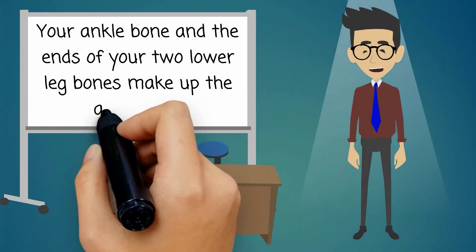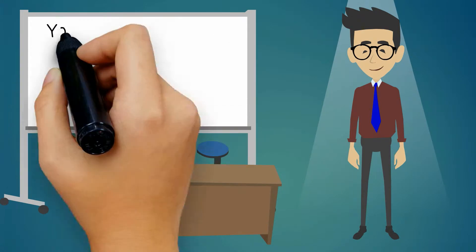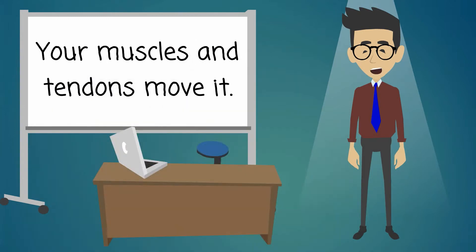Your ankle bone and the ends of your two lower leg bones make up the ankle joint. Your ligaments, which connect bones to one another, stabilize and support it. Your muscles and tendons move it.